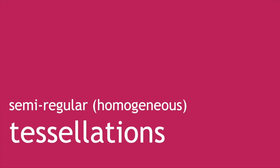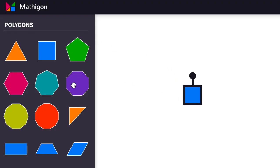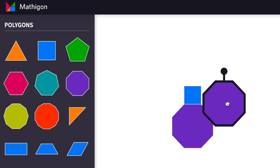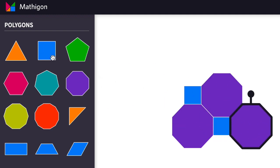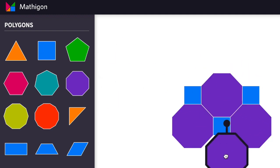As well as tessellations of single shapes, we can use combinations of shapes. A particular type that we'll briefly look at, referred to as semi-regular or homogeneous tessellations, still use regular shapes, and require the same arrangement at each vertex, however now we are allowed to use more than one.